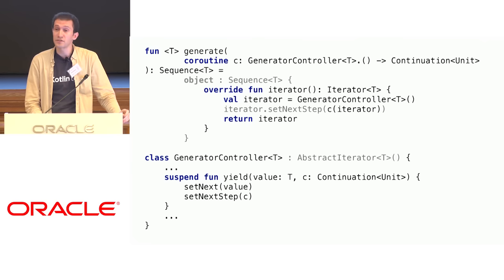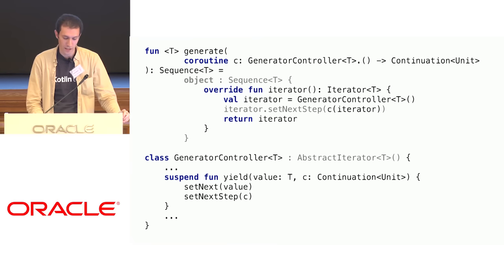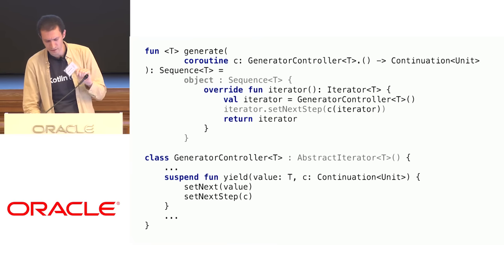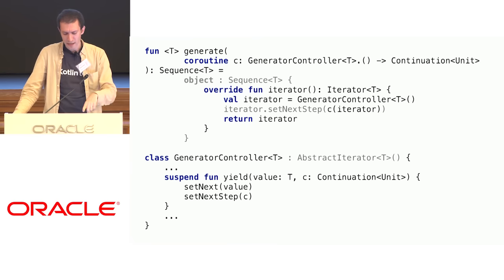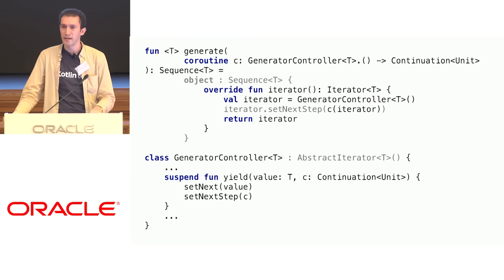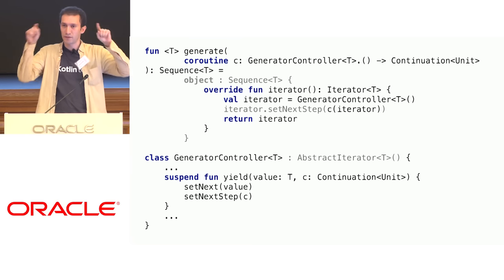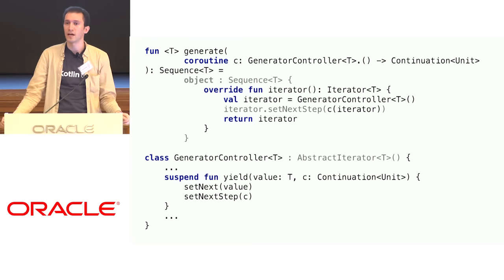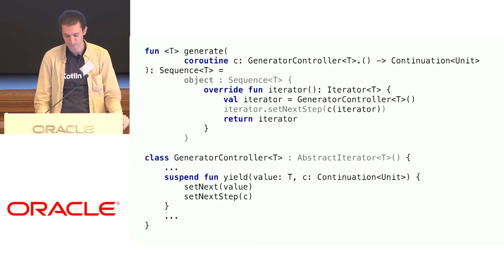Every async returns a different value. The idea is that yield uses the type parameter of the class, but it could have declared its own type parameter.